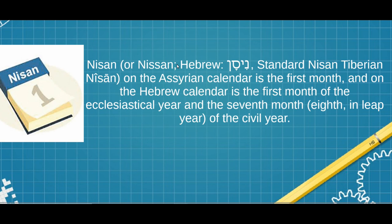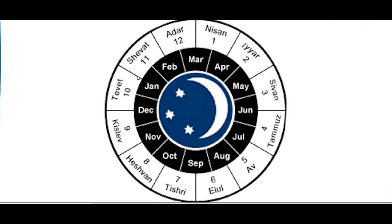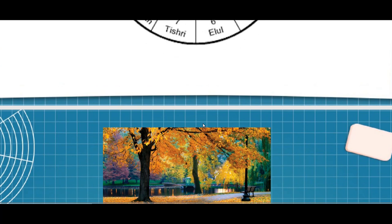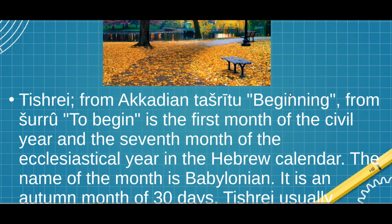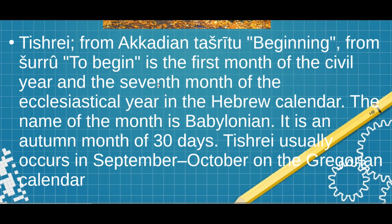On the civil calendar — same picture, Hebrew in the white, Gregorian in the black — Nisan is up here around March and April. That's the religious side. On the civil side, the first day of the first month — which is what actually changes the overall year for the calendar — is in October/September, around autumn. Tishri is the month. From Akkadian, known as 'beginning,' from 'suru' meaning to begin, it is the first month of the civil year and the seventh month of the ecclesiastical year on the Hebrew calendar.